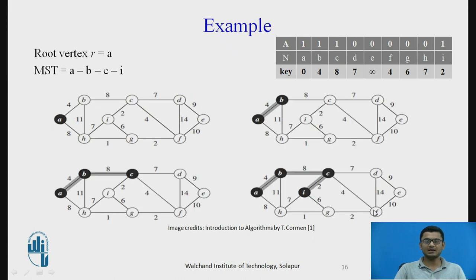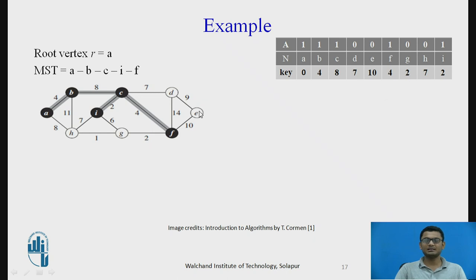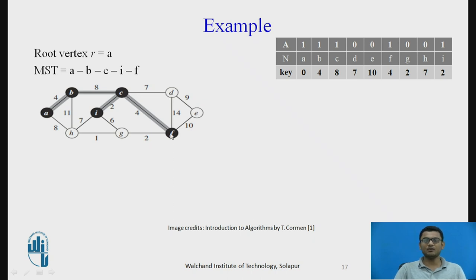Next, the node with the least key value among unvisited nodes is selected — we select node F. The adjacent nodes of F, namely G, E, and D, update their key values. The key value of G is updated to 2, E is updated to 10, and D remains at 7 because its weight from C is 7 and from F is 14, so we keep the minimum of 7.